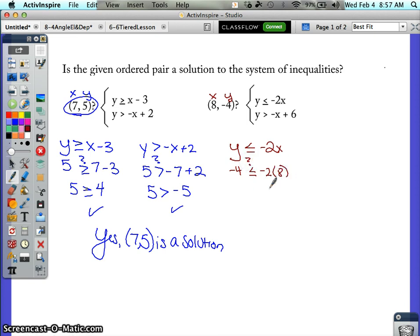Well, -2 times 8 is -16. Is -4 less than or equal to -16? Be careful here, think about this. Negative 4 is not less than. Remember on a number line, -16 would be over here, -4 would be over here, 0 is over here somewhere. Negative 16 is actually the smaller one. So is this true? No.